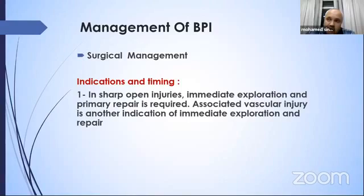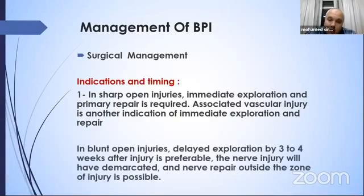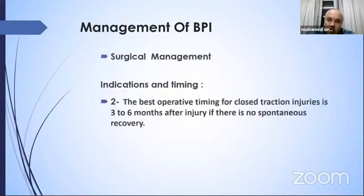Surgical management indication and timing differ according to the cause of brachial plexus injury. For sharp open injuries like stab wounds, immediate exploration and primary repair is required. Associated vascular injury is another indication for immediate exploration. For blunt open injuries, delayed exploration by two to three weeks after injury is preferable because the nerve injury will have been demarcated and nerve repair outside the zone of injury is easier. For closed traction injuries, the best operative timing is three to six months after injury to allow time for spontaneous recovery.